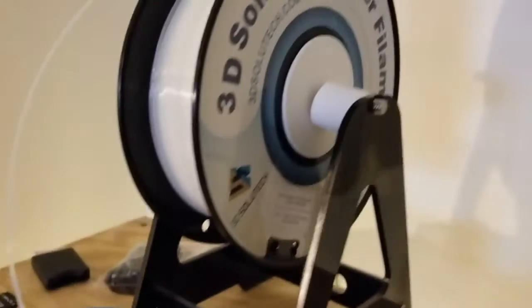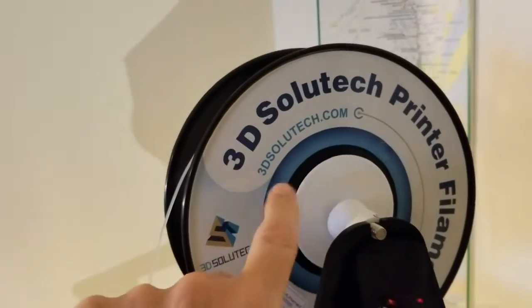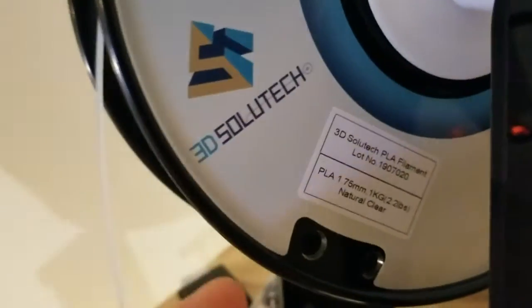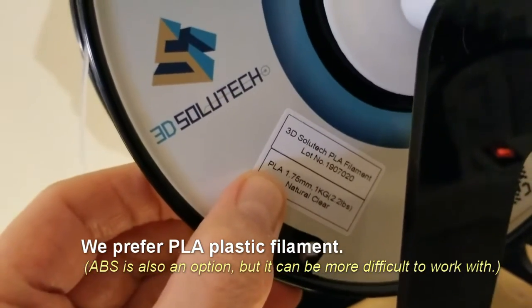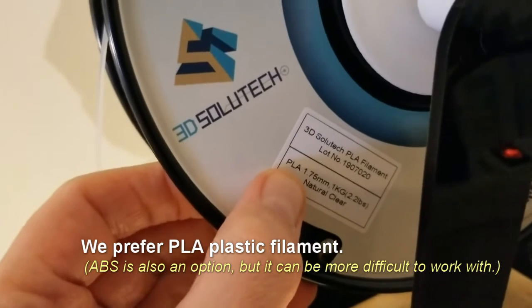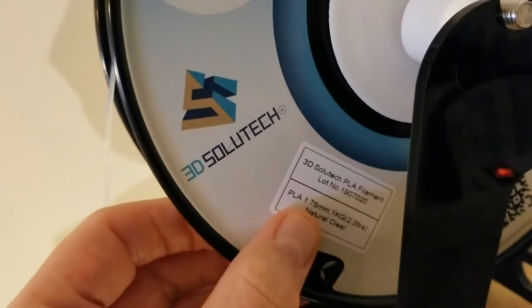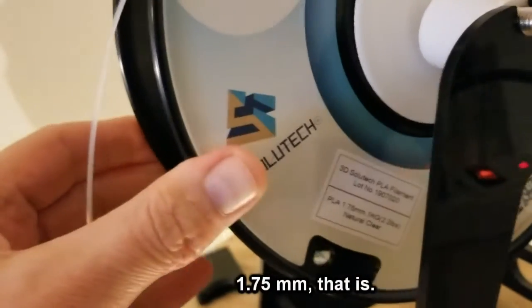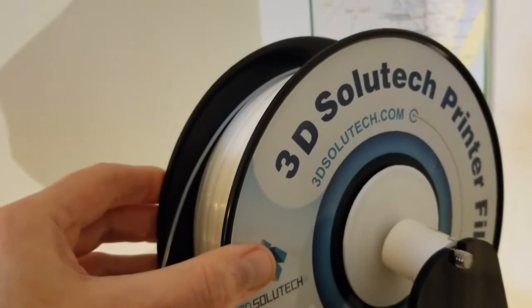Something else to consider is the type of filament that you use. We've gone through all kinds of different vendors, but we like this one from 3D Solutech. And I just want to call your attention to the fact that we are using PLA, which is a type of plastic. ABS is a different type, but this machine can do PLA and ABS. We prefer the PLA for a lot of reasons. And the diameter of the filament is 1.75. This is a clear, natural, clear filament. And it usually comes in one kilogram spools like we have here.